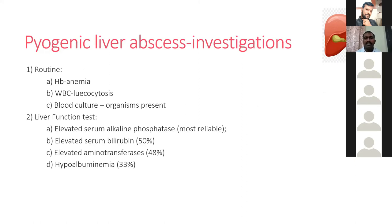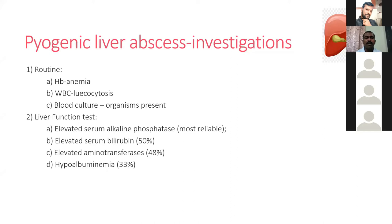Investigations for pyogenic liver abscess: blood investigation may show anemia and leukocytosis. Blood culture is positive in around 20% of patients. Liver function tests show elevated serum alkaline phosphatase, which is the most important liver marker. Patients may also have elevated bilirubin, elevated aminotransferases, and hypoalbuminemia.